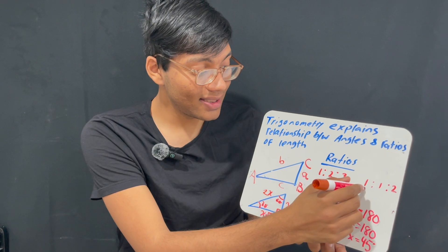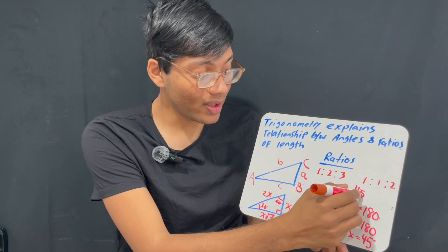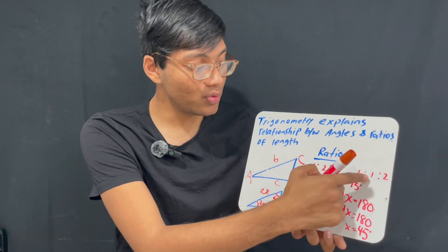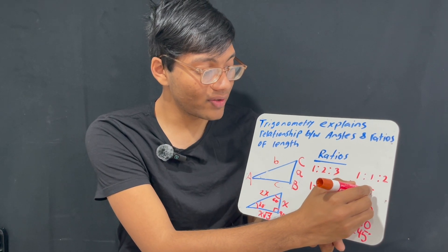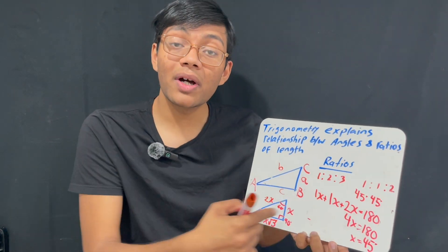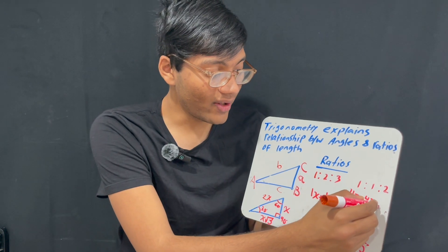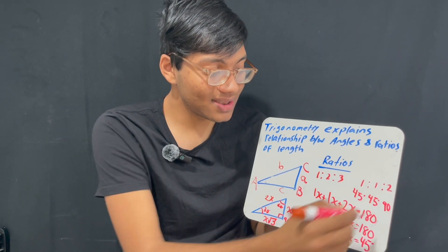That means that this 1 corresponds to 45 degrees. And this 1 corresponds to 45 degrees. And this 2 corresponds to 2 times 45 degrees, which is 90 degrees.